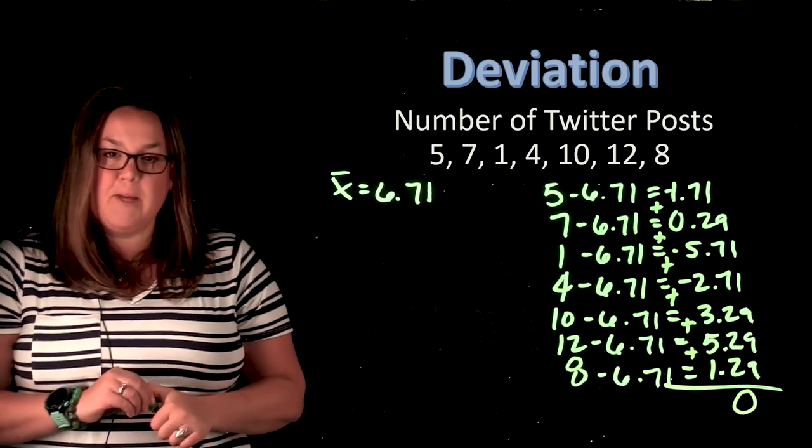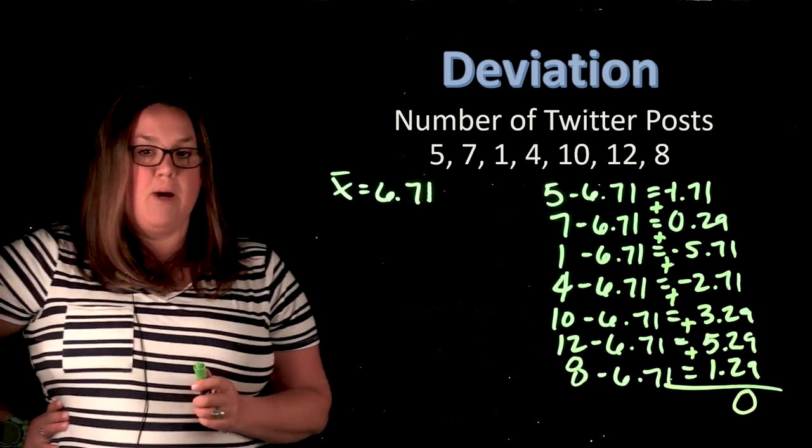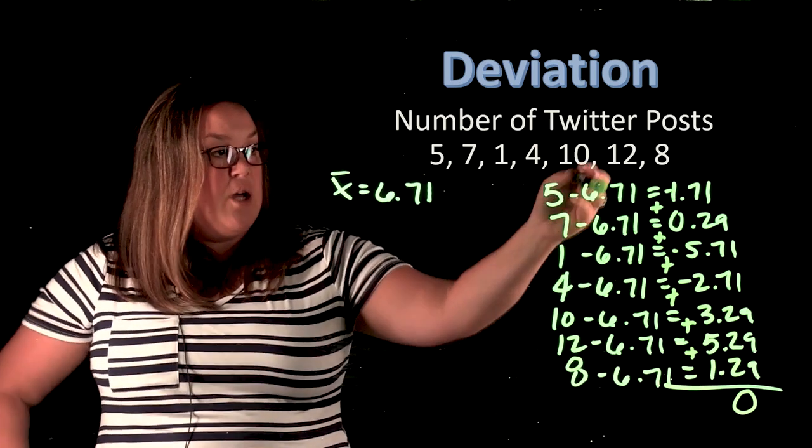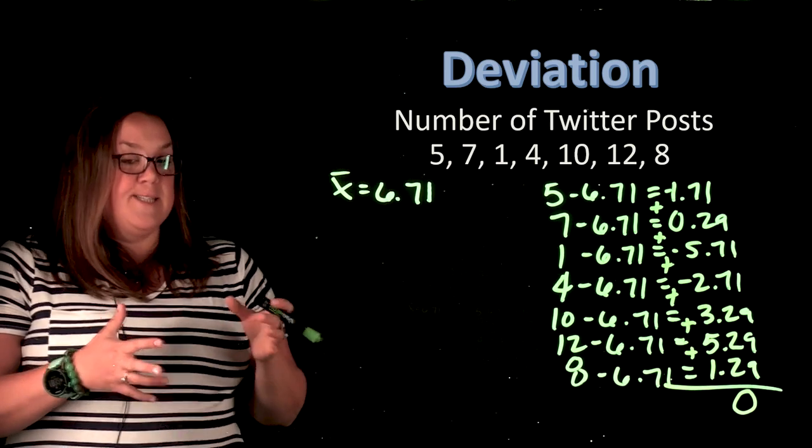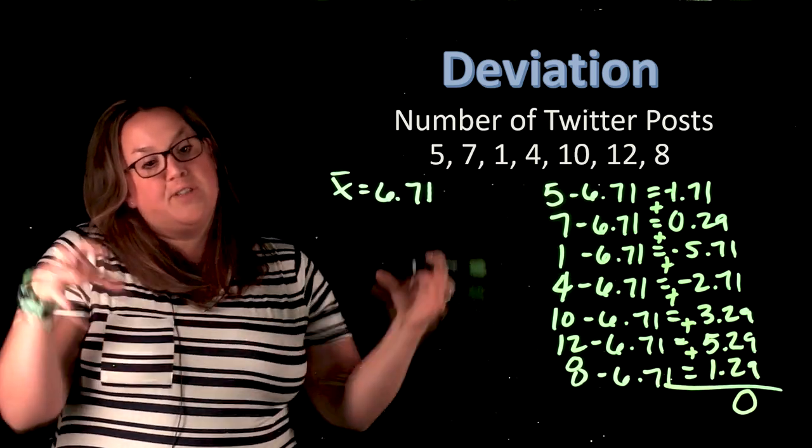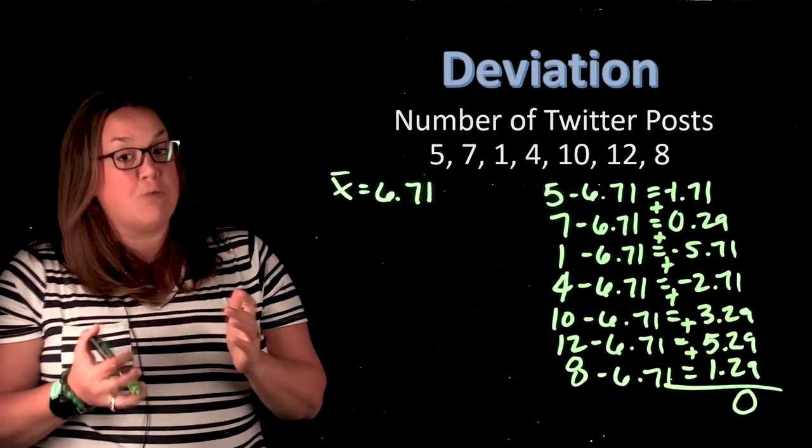And intuitively, that should make sense now that you're maybe thinking about it, because all of these observations created this mean. And so that being in the center would make the distance that all of the values collectively fell from the mean equal to 0.